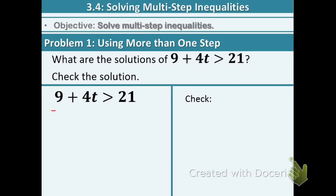Minus 9, minus 9. The reason why we're subtracting 9 first is because we're using the reverse order of operations. So we get 4t greater than 12.